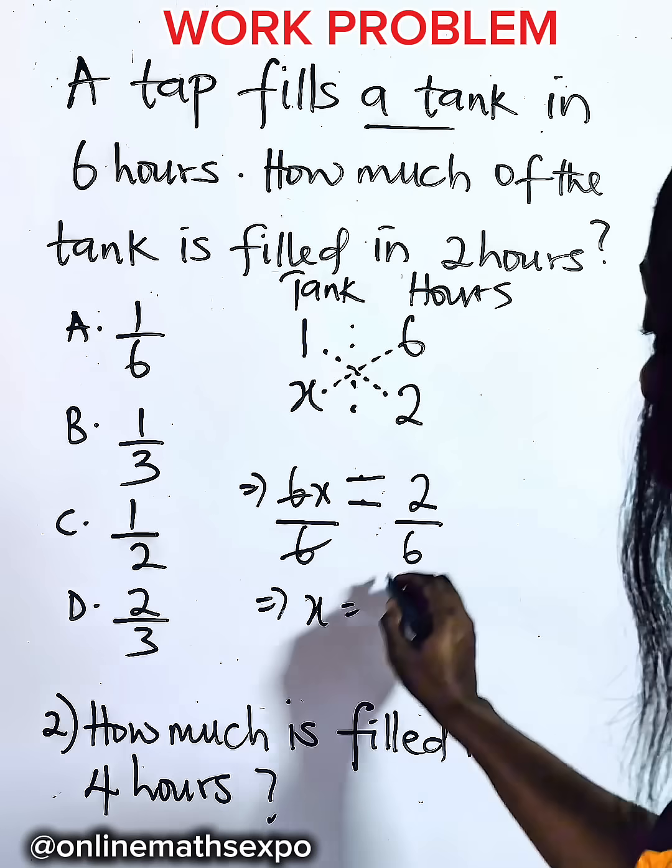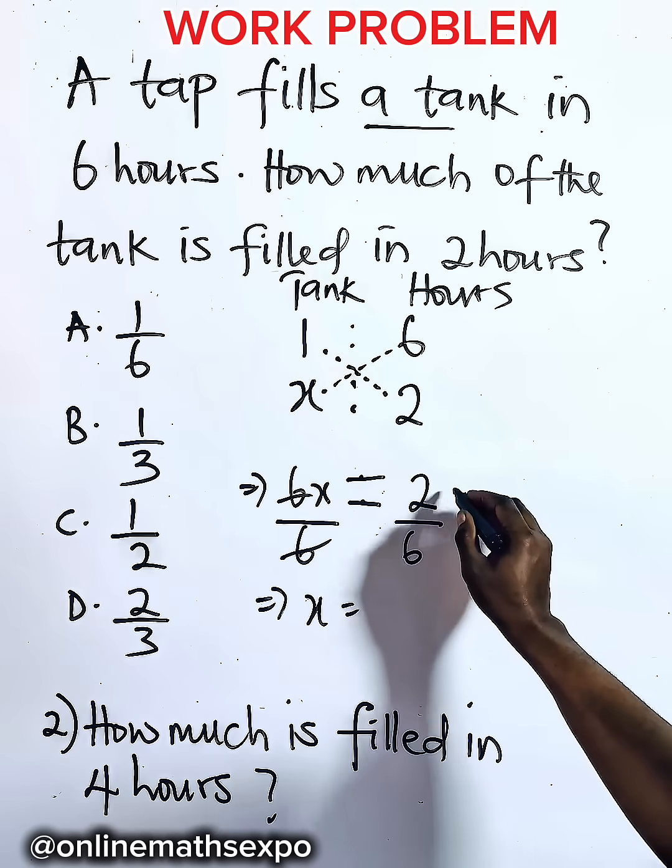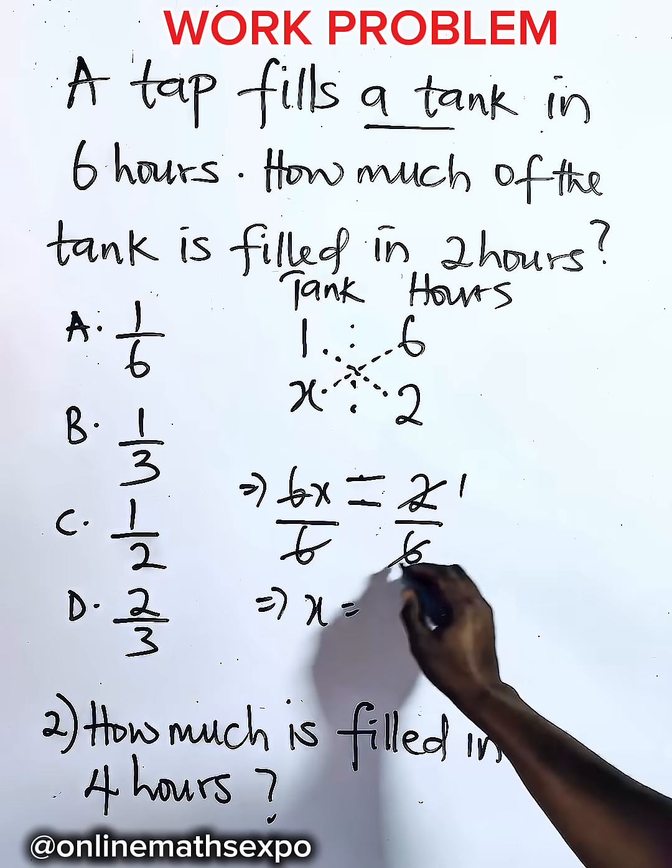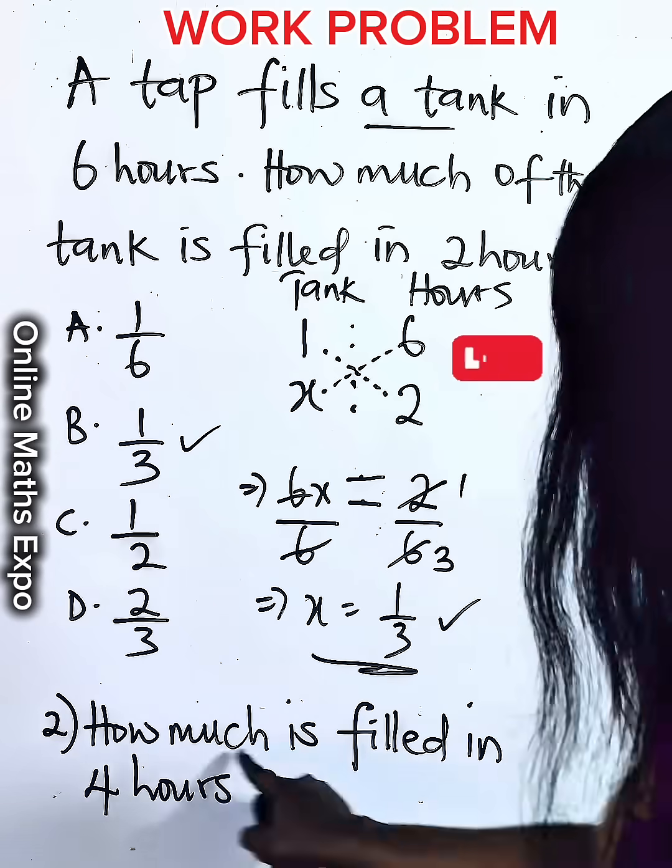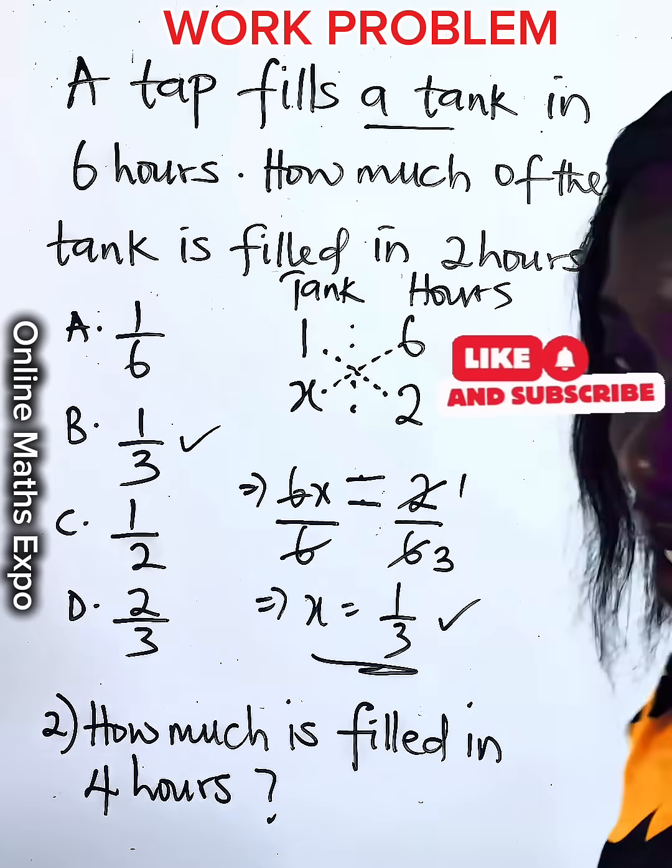So x will give us two over six, which is the same as two here, one, two here, three. So we have one third, and that is option B.